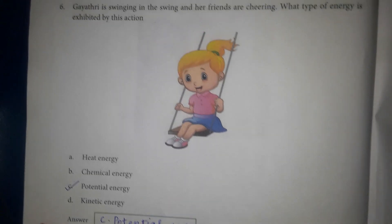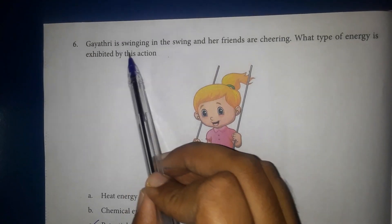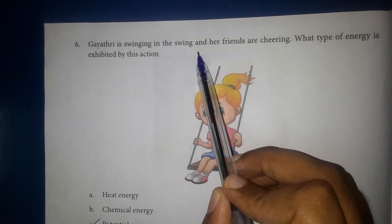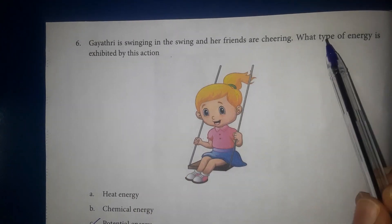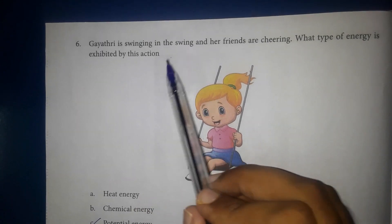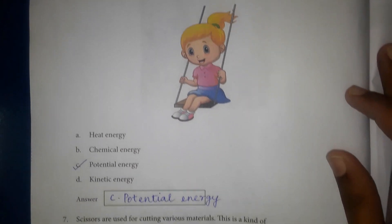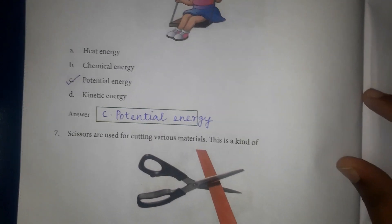Sixth question: Gayatri is swinging in the swing and her friends are cheering. What type of energy is exhibited by this action? The answer is option C, Potential Energy.